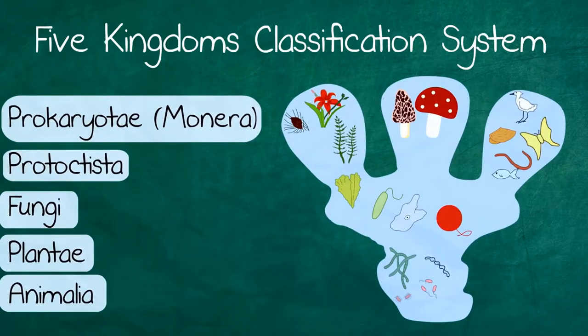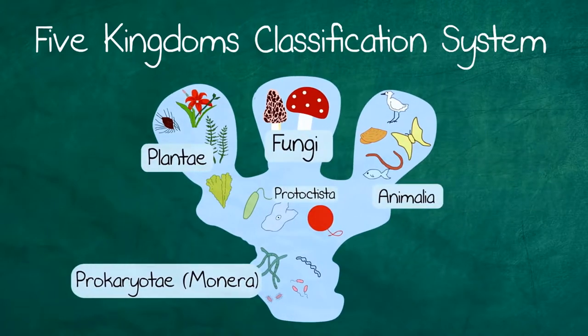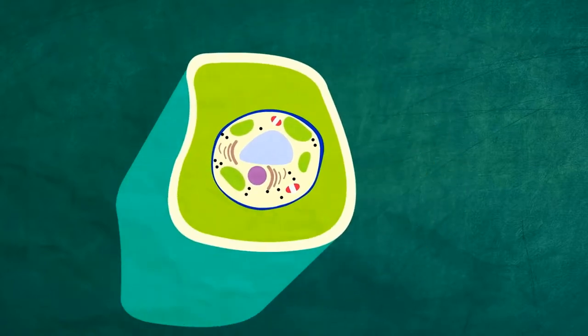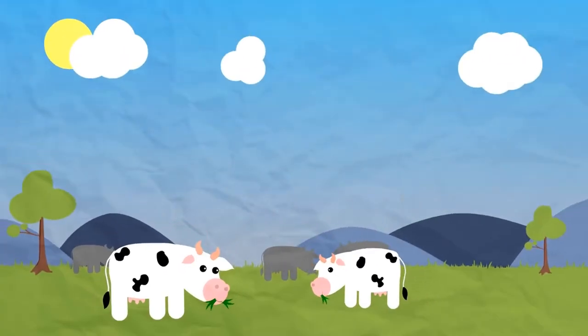Each kingdom has characteristic features so that an organism can easily be assigned to one of the kingdoms. These characteristics are based on cell walls, whether they are eukaryotic, prokaryotic, and on the way they get nutrition.